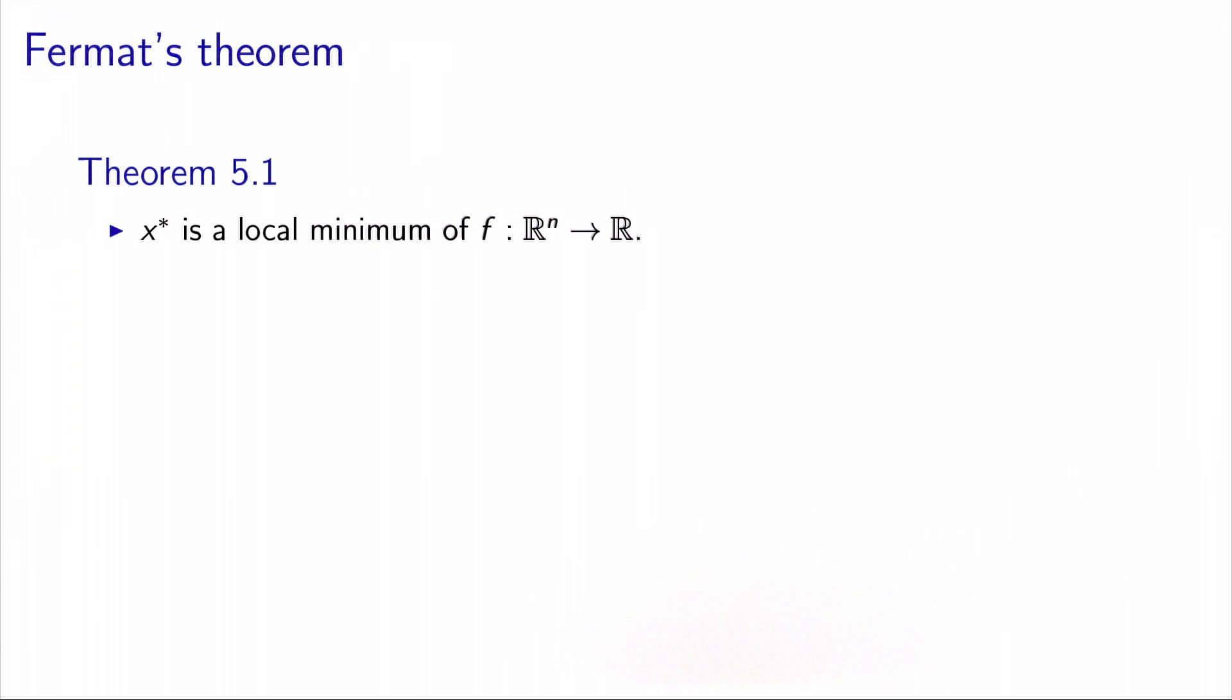The first result is a theorem which is attributed to Fermat and which is numbered 5.1 in the book. It says that if x star is a local minimum of a function f, in this case, if f is differentiable around x star, we have that the gradient of the function at x star is equal to zero.